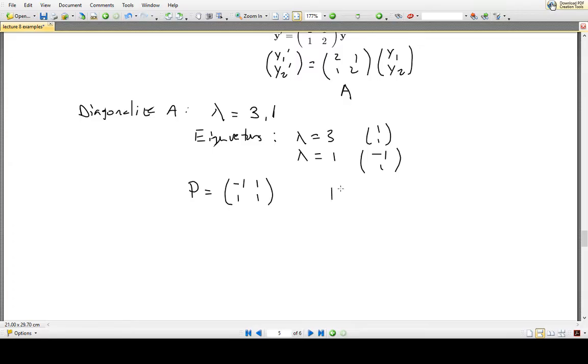We can calculate P inverse, which I'll save space and write over here. So just finding the inverse of P, what we can find is that the inverse is (1/2)[[-1,1],[1,1]]. And the diagonal matrix is actually equal to just the eigenvalues, which in this case are going to be written as [[1,0],[0,3]].